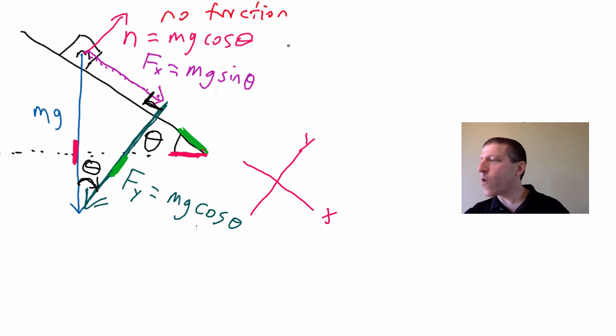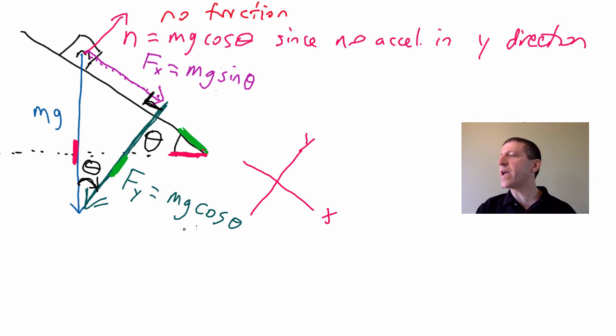Just the same as F_Y, since there is no acceleration in the Y direction. That is how we know that the normal force is mg cos(theta) in this situation. That is not a general rule that the normal force is mg cos(theta), but it happens to be in this situation.